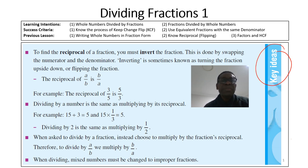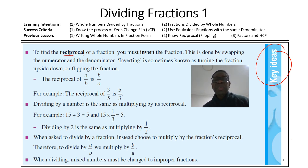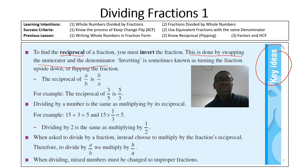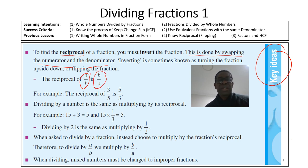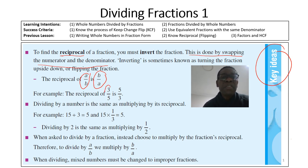The reciprocal — another word for reciprocal is flip or invert — means we are turning our fraction upside down. You're swapping the numerator and the denominator. For example, the reciprocal of a divided by b is b divided by a. So the denominator becomes the numerator and the numerator becomes the denominator. For example, the reciprocal of 3 over 5 is 5 over 3.